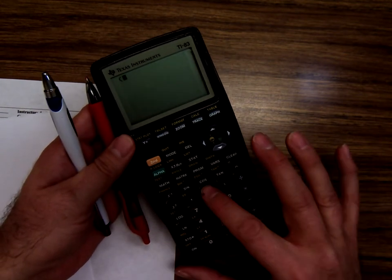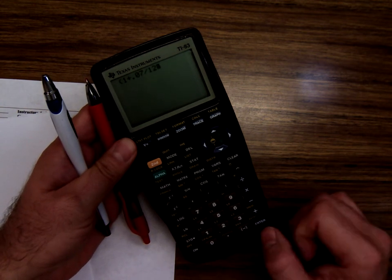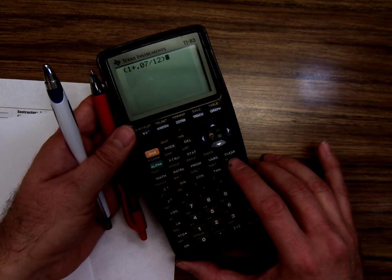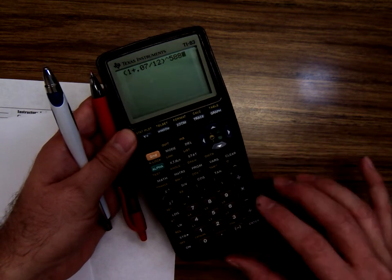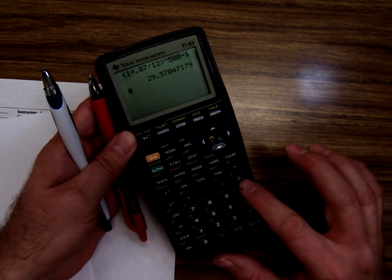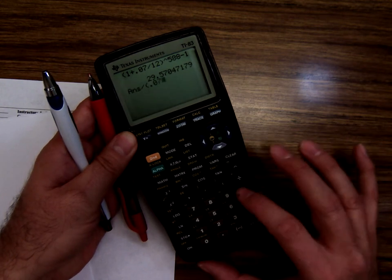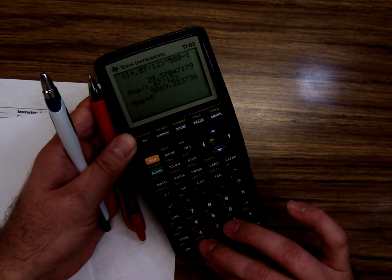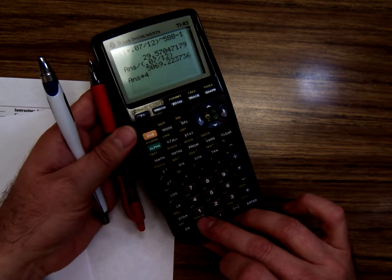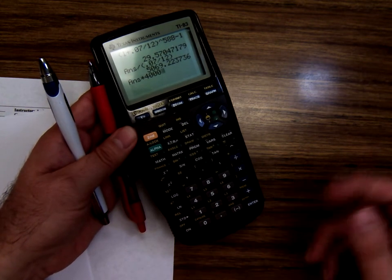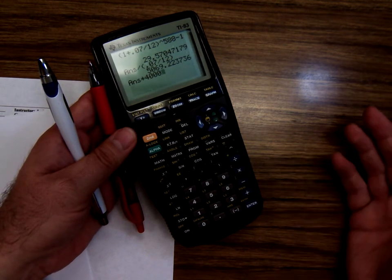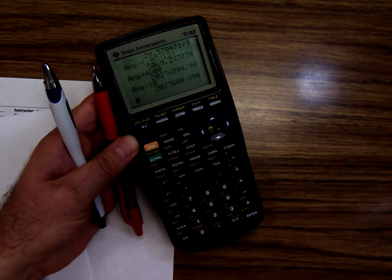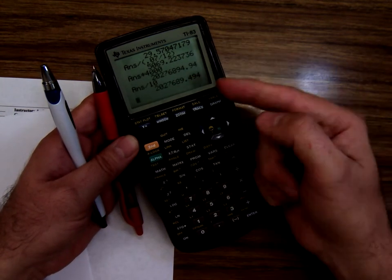I'm going to turn it on and start going. This will be your chance to punch in and see if you can get it. One plus 0.07 divided by 12, close parentheses, raised to the 588 power, then a minus 1, divided by parenthesis 0.07 over 12. This is where we've been multiplied by 400. That's visible. I put 4,000. So really, since it was one extra zero, I need to move the decimal point over one.